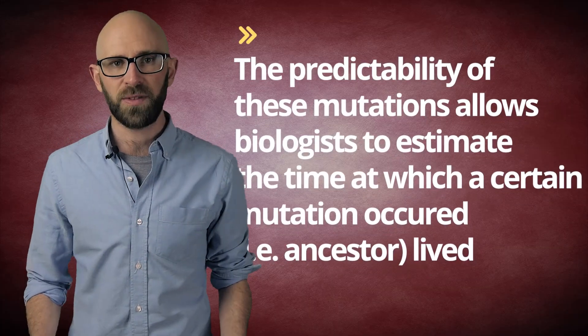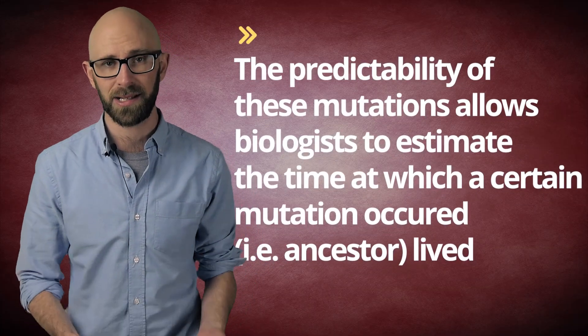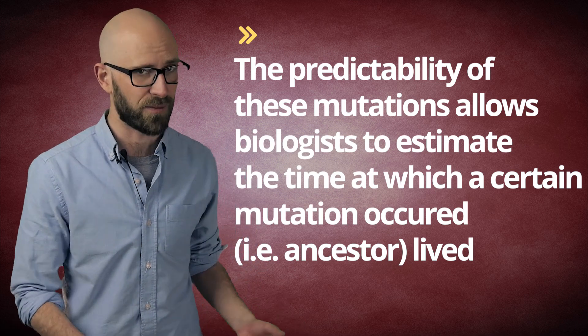Over time, however, there will occur predictable mutations to Mitochondrial DNA. Biologists can compare samples from individuals to determine how closely they are related. The fewer predictable mutations, the closer the relationship. The predictability of these mutations allows biologists to estimate the time at which a certain mutation occurred, i.e., when the ancestor lived.